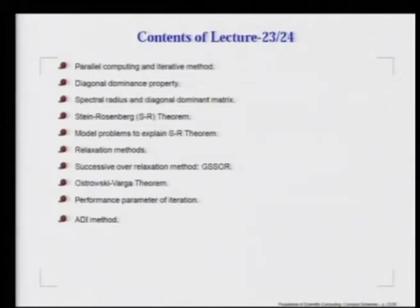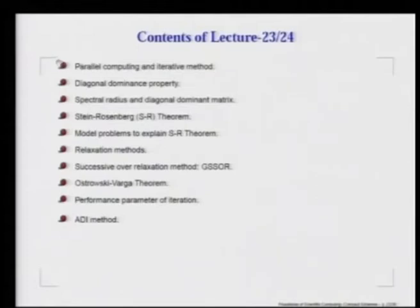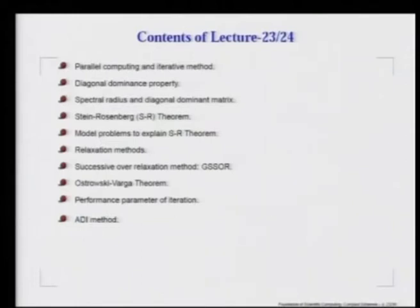In this combined lecture 23rd and 24th, we continue our discussion on solving elliptic equations. We go back historically to the Jacobi method and point out that some of these point-iterative methods are more amenable to parallel computing. We also discuss the convergence properties of this method, which relate to the diagonal dominance property of the associated A matrix, which in turn determines the spectral radius of this diagonally dominant matrix. In this context, we talk about a theorem attributed to Stein and Rosenberg.